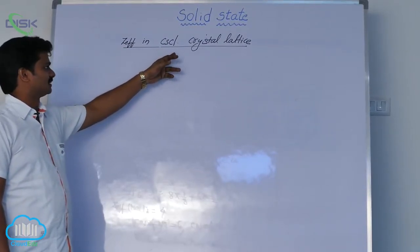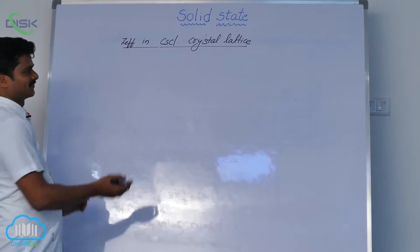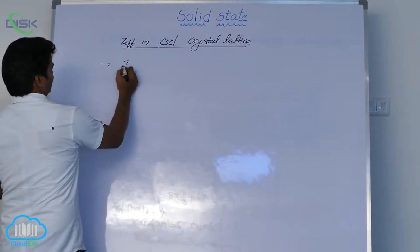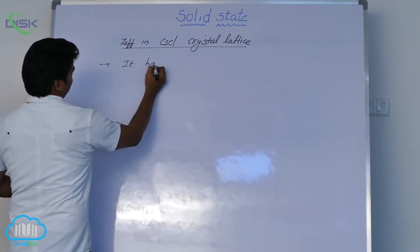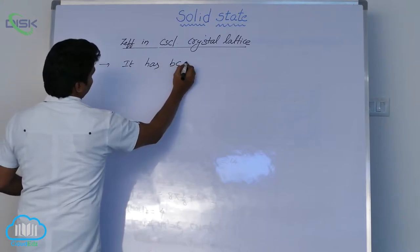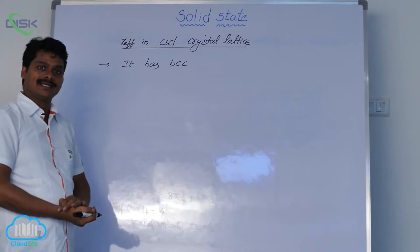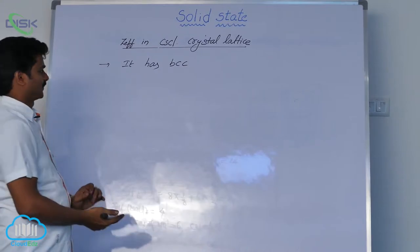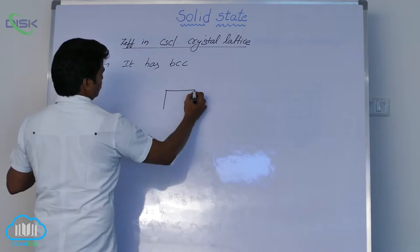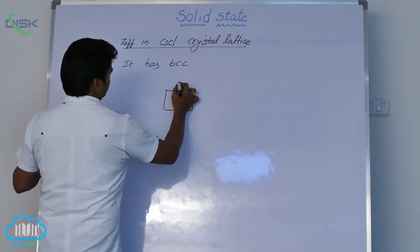There is cesium chloride crystal lattice. It has a body-centered cubic geometry. You can see what is essential - see its structure. There is also specific geometry.